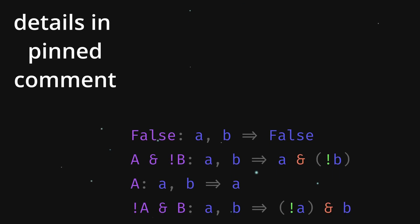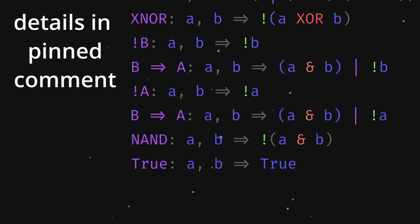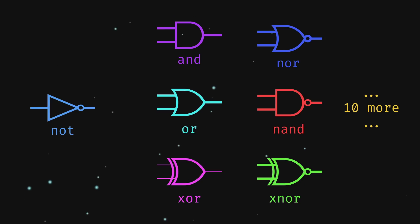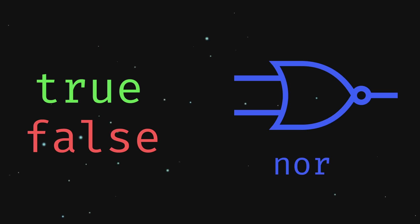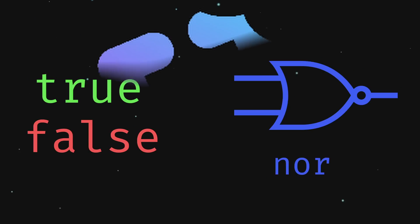Since every other logic gate is defined with AND, OR, and not, we can now simulate all 17 logic gates with just NOR. Now, we're left with booleans and the NOR gate, and that's about as far as we can go. I think that's pretty fascinating. Anyways, thanks for watching.